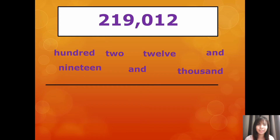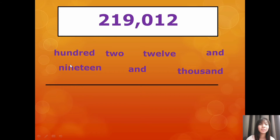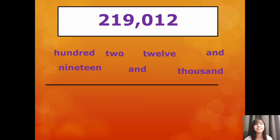Okay, let's have more examples here. Can you please try to read the number on the screen? Very good — two hundred and nineteen thousand and twelve. So, let's get familiarized with the vocabulary. Hundred, H-U-N-D-R-E-D. Nineteen, N-I-N-E-T-E-E-N. Two, T-W-O. And, A-N-D. Twelve, T-W-E-L-V-E. Thousand, T-H-O-U-S-A-N-D. And, A-N-D.